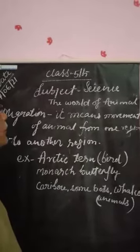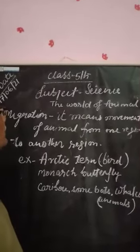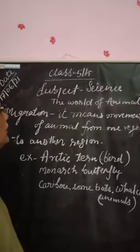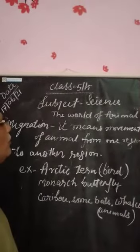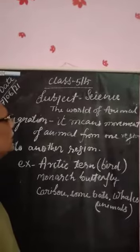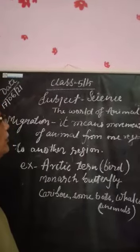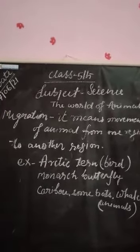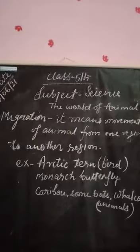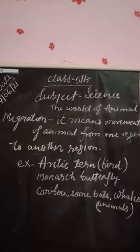Today's date is 17 June. The first lesson is 'The World of Animals.' The last topic in this lesson is migration. Migration is defined as the movement of animals from one place to another, or from one region to another, in response to changes in season, habitat, or availability of food.